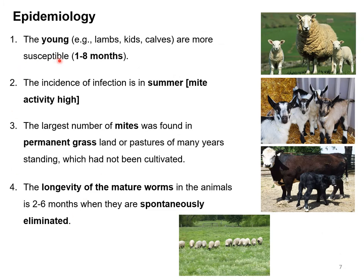Some important epidemiological features: Monieziosis mostly occurs in young animals — lambs, kids, and calves — in the age range of one to eight months. Incidence is higher in summer months when mite activity is higher. Mite activity is also higher on permanent grassland or pasture left uncultivated for a longer period. Animals grazing on such land have a higher chance of infection. The longevity of the mature parasite in the animal is around two to six months, after which they are spontaneously eliminated.